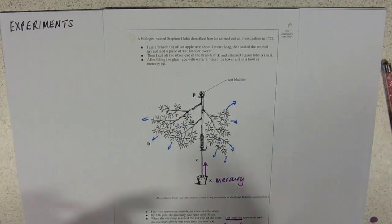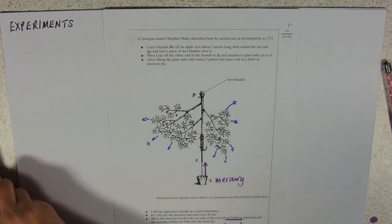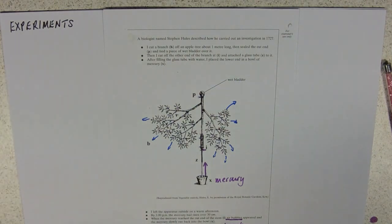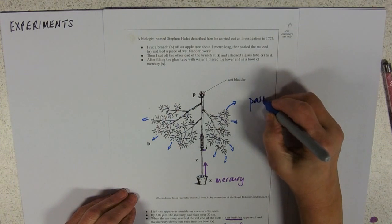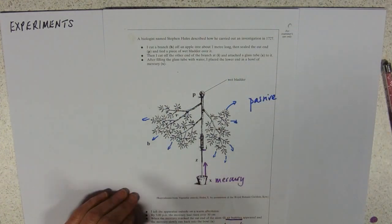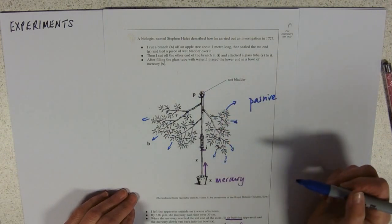So, why did he bother doing this? Well, it shows really that, first of all, the water movement is passive. And although we think, and you will have been taught at school, yes, it always moves from roots to leaves.